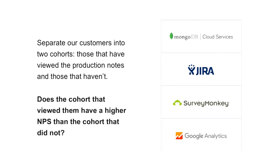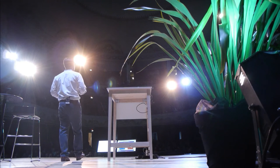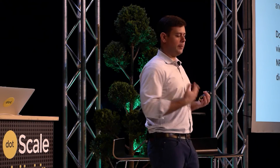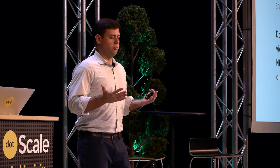So the next thing we need is a problem. Let's look at a very specific one using the MongoDB use case. We want to separate our customers into two groups: those that have viewed our production notes page in our documentation, and those that haven't — and see if one group has a higher net promoter score than the other. Basically, did customers who read the production notes have a better experience with MongoDB and therefore were happier? To do that, we need to merge documentation statistics, user identity, client associations, actual survey data, and user origin.